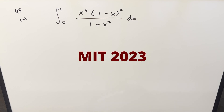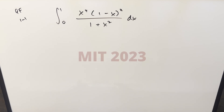We have here today another integral from the MIT integration bee quarterfinals, round one problem one. We have the integral from zero to one of x to the fourth times (1 minus x) squared, all over (1 plus x squared) dx.